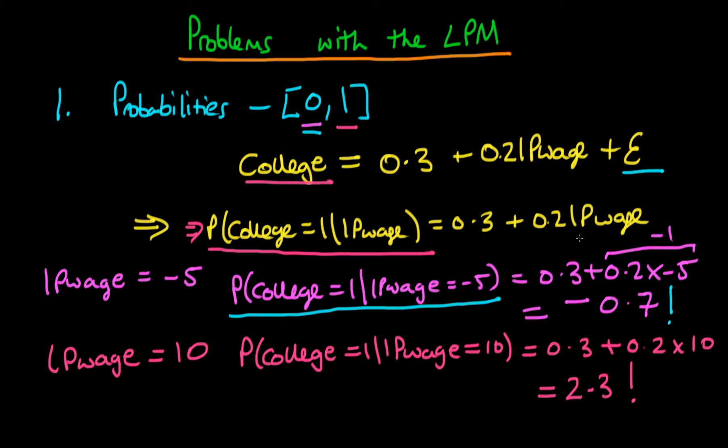But we had an independent variable, in this case log of parental wage, which wasn't actually limited. In fact, the log of parental wage can take on the values at a minimum minus infinity and it can take on an upper bound of plus infinity. So because of this, and because we just have a linear model, that means that we're definitely going to get values which are outside the acceptable range for our dependent variable.